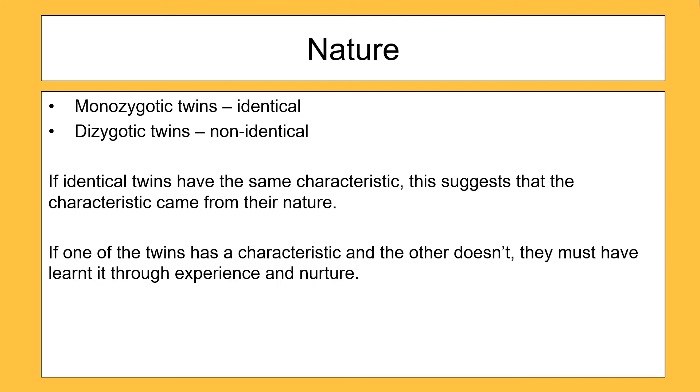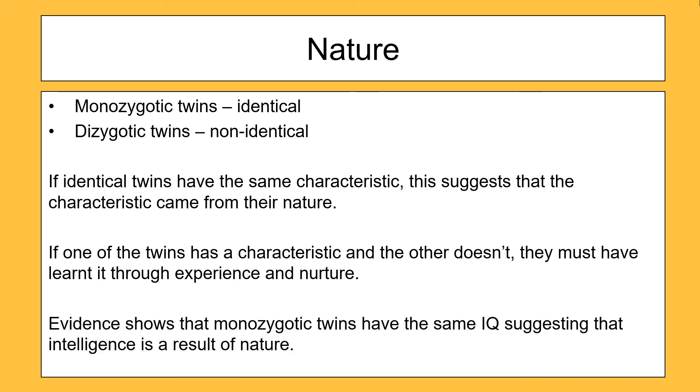Through lots of research onto twins, what we have learnt is research and evidence does show that monozygotic twins have a very similar IQ, that's intelligence score, which is suggesting to us that intelligence could come from our nature. People are born with intelligence. And so this is a good argument for the nature debate. And this shows us that nature can affect how your brain develops.